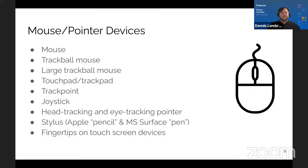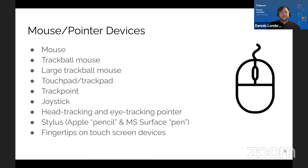Pointer devices — what do we mean? There's the standard mouse, trackball mouse, large trackball mouse, touch pads and track pads, track points, joysticks, head tracking and eye tracking pointers, the stylus like the Apple Pencil and Microsoft Surface Pen, and fingertips on touch screen devices. These are all different types of pointer devices.